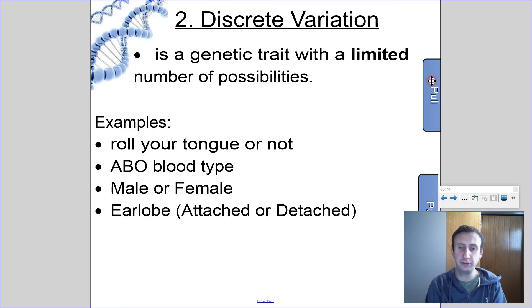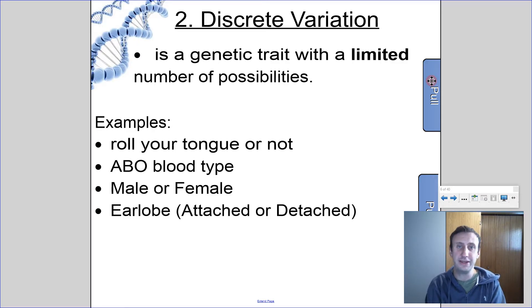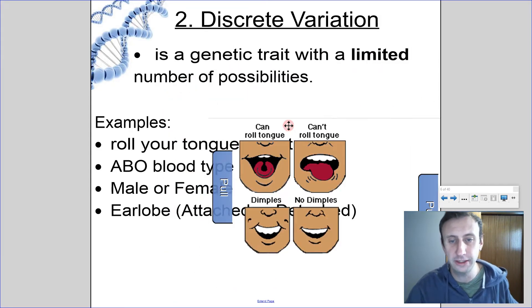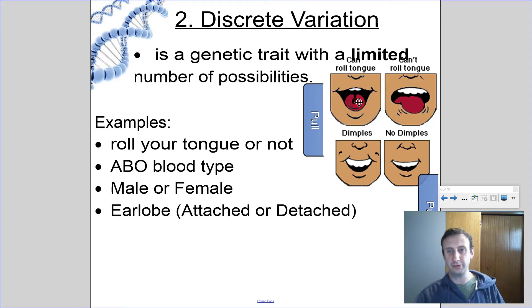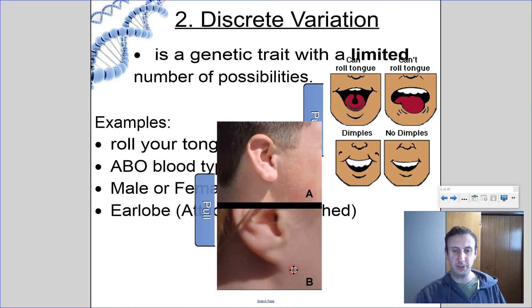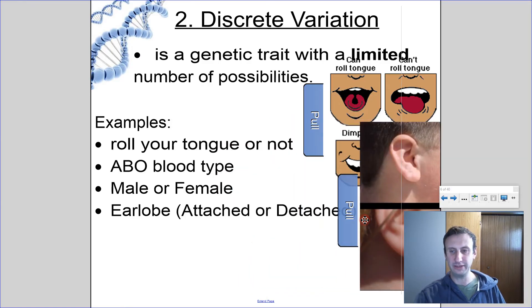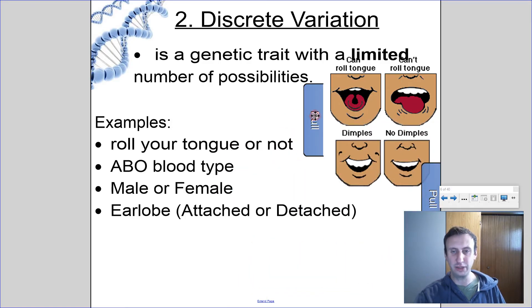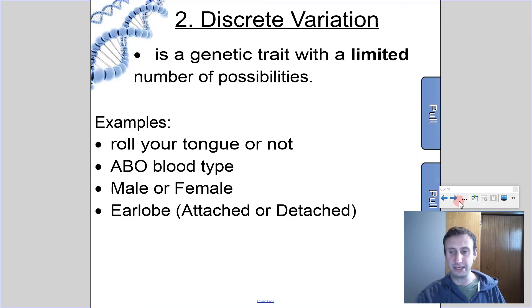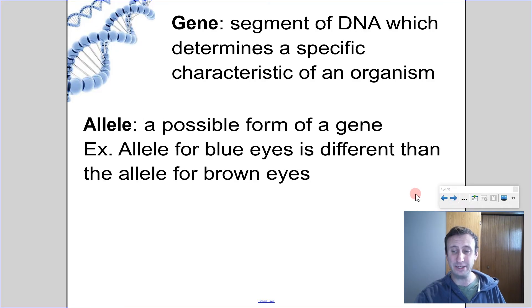Male or female — when you look at sex, there are two options based on the chromosomes you get. Earlobe, whether your earlobe is attached or not, is discrete variation as well. Here's tongue rolling again: can roll, can't roll. Dimples is another one — whether you have dimples or not. And here's the earlobe: this is an attached earlobe and this is an unattached or dangling earlobe. These are examples of discrete variation in that we just have a limited set of options.